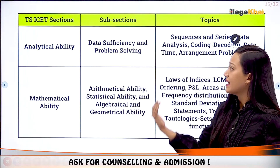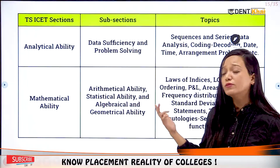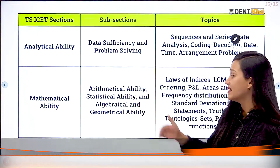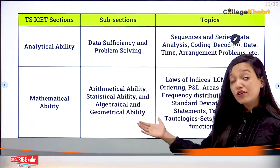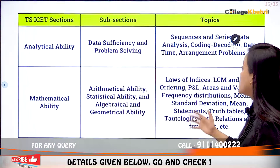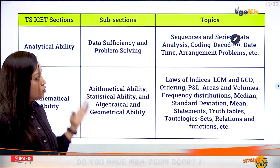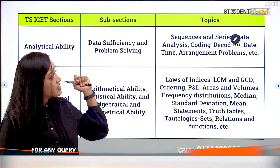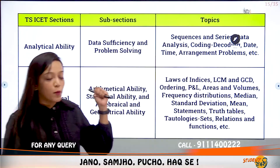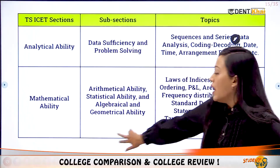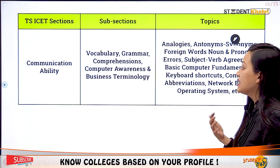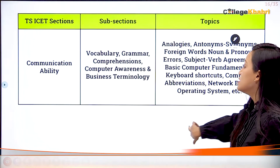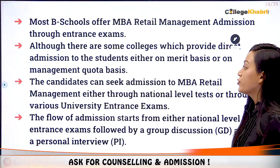Regarding the syllabus, there are two main sections: Analytical Ability and Mathematical Ability. Analytical Ability includes data sufficiency, problem solving, sequences and series, data analysis, and coding-decoding and date-time arrangement problems. Mathematical Ability includes arithmetical ability, statistical ability, algebraical ability, and geometrical ability. There is also a Communication Ability section covering vocabulary, grammar, comprehension, computer awareness, and business terminology.